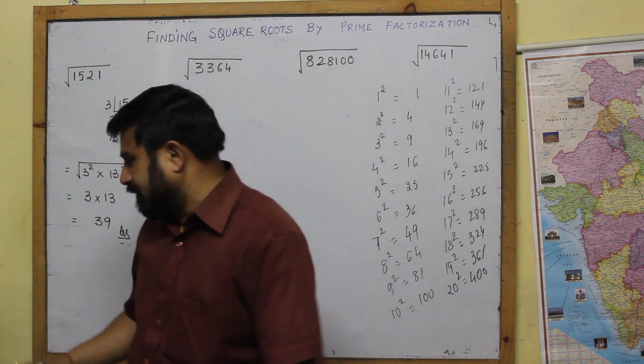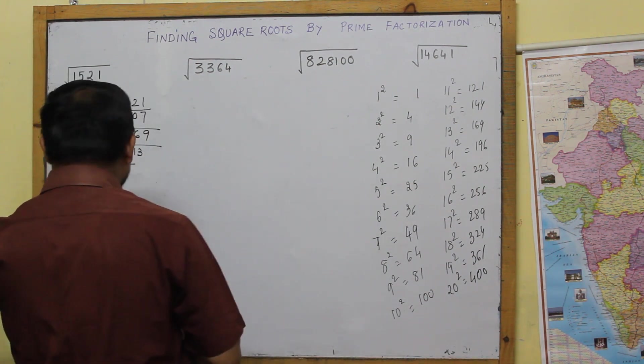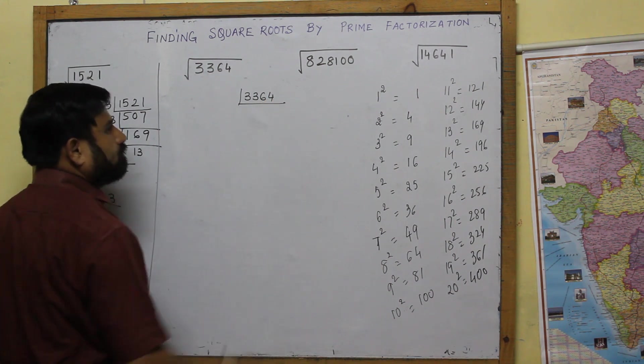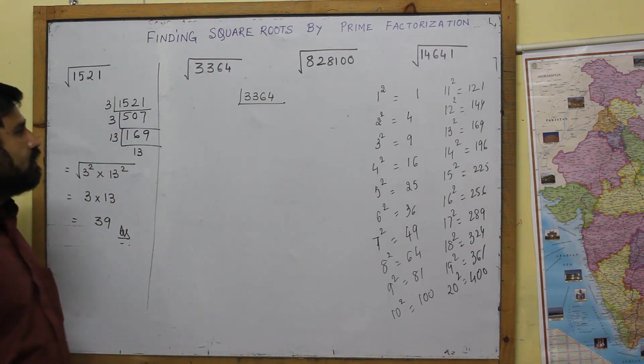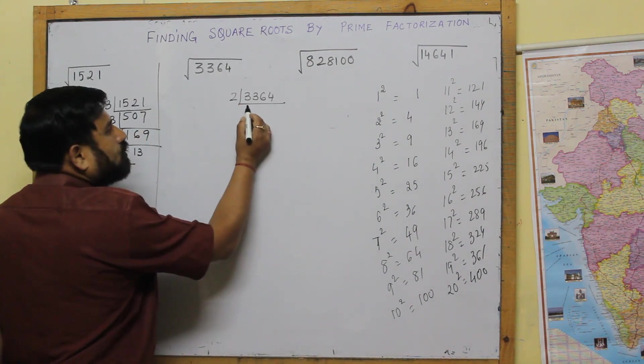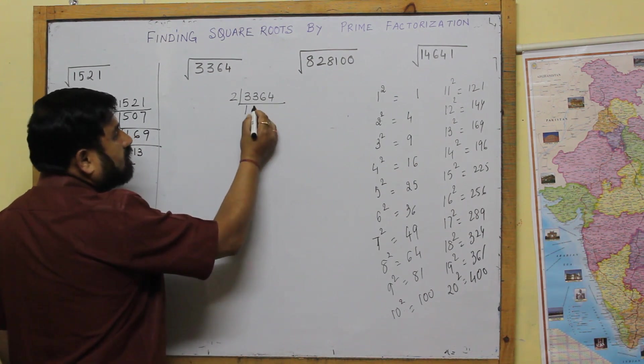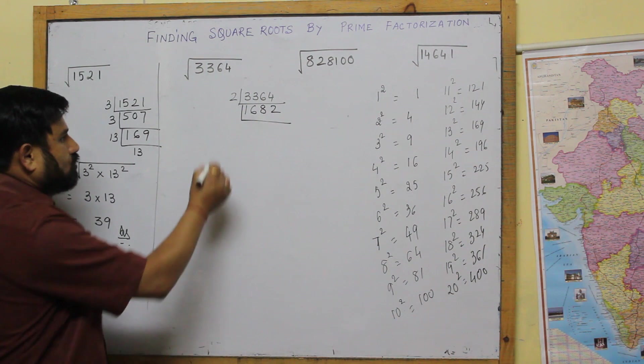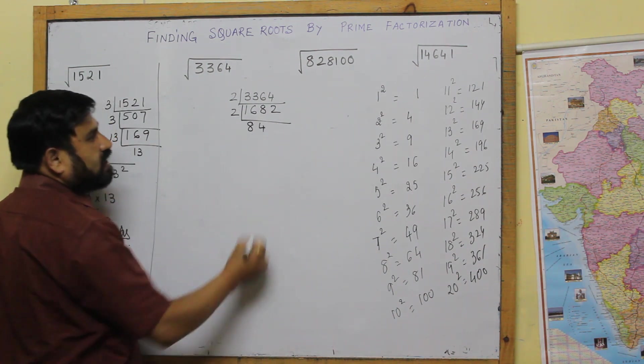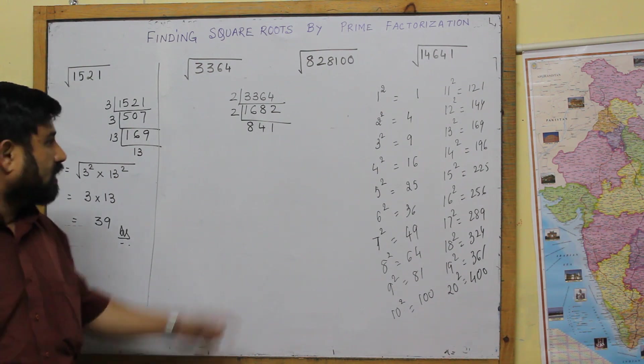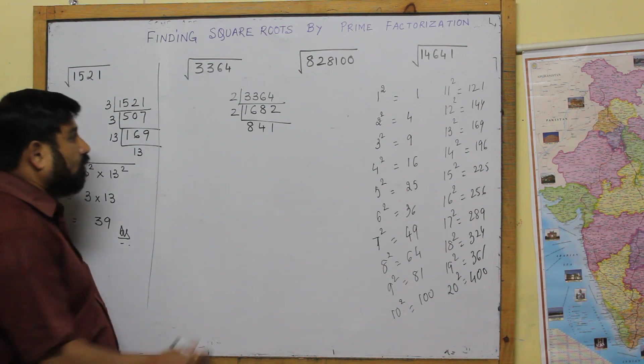So that's a simple one. Let's take a little bit complicated one which has got some different numbers. Let's take 3364. It's a little longer. Since 4 is an even number it will be divided by another even number. Let's take 2. So 2 into 2 then comes 1682, 2 into 841.